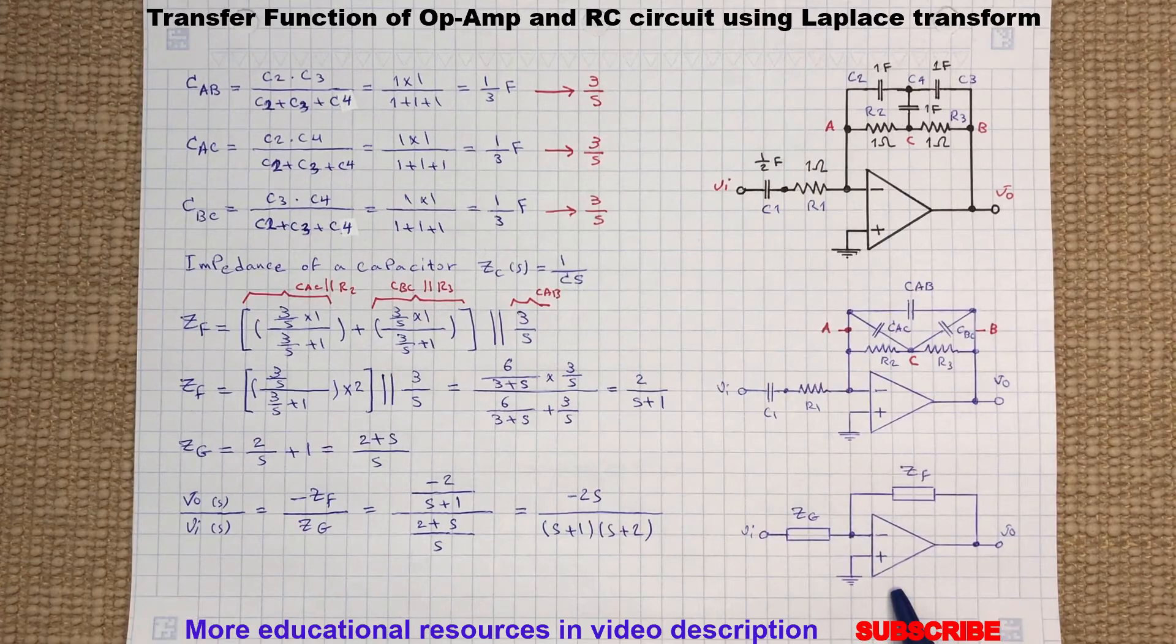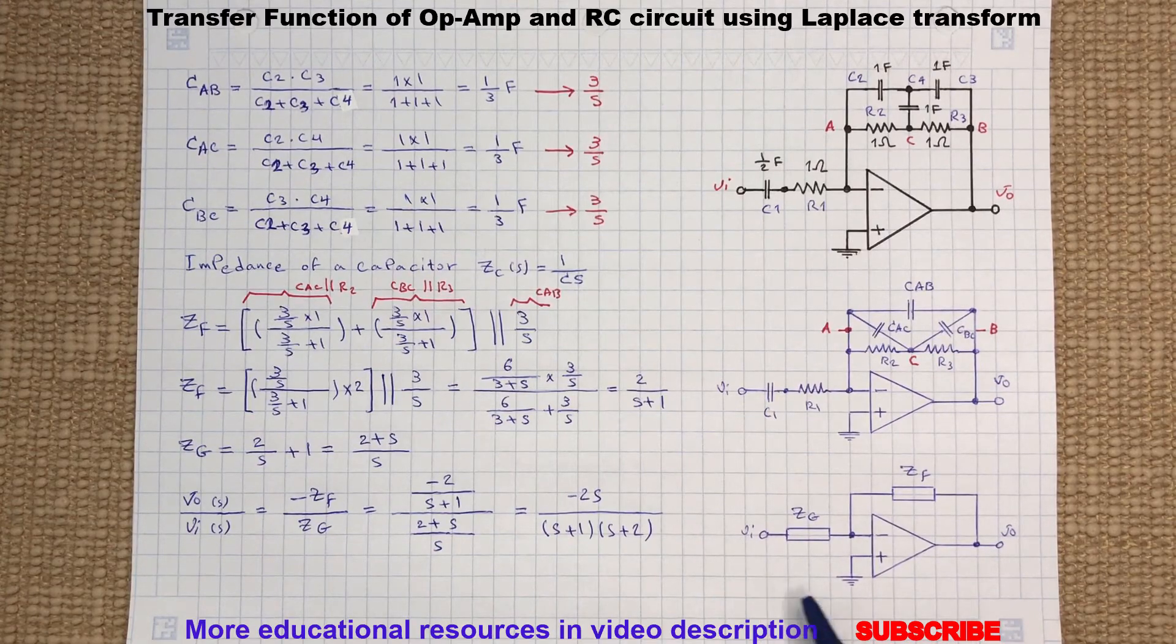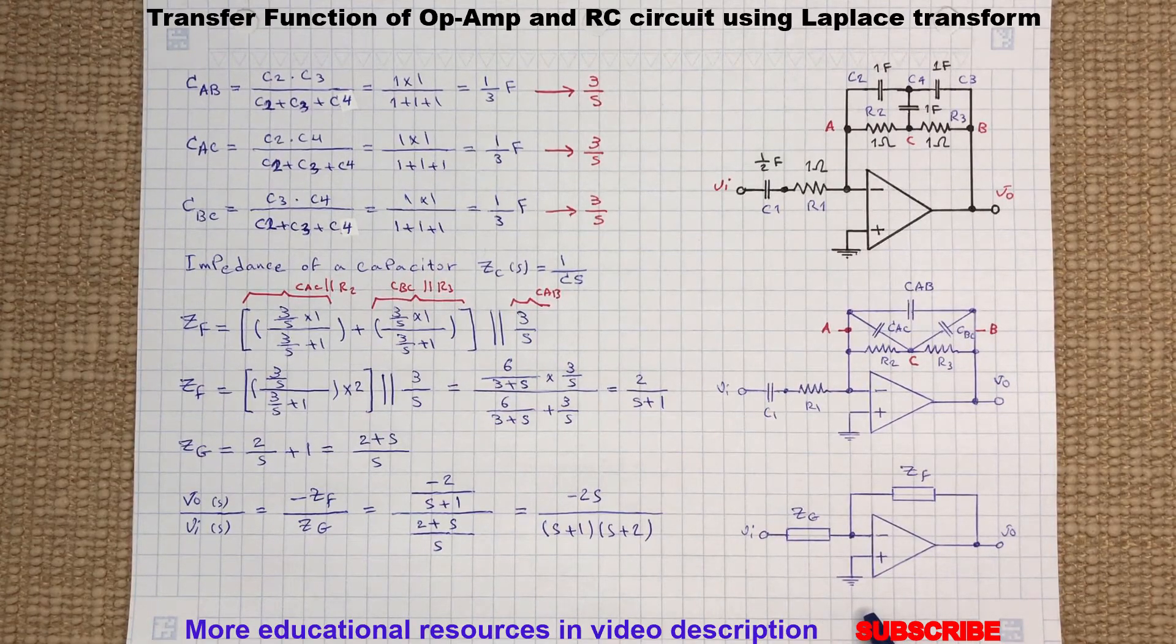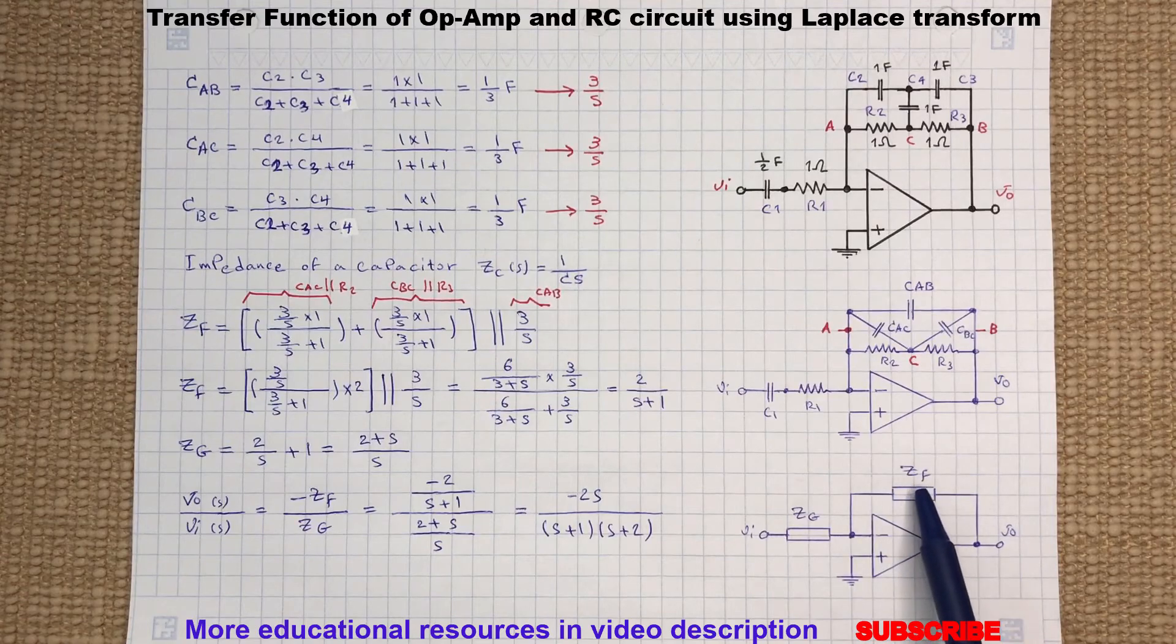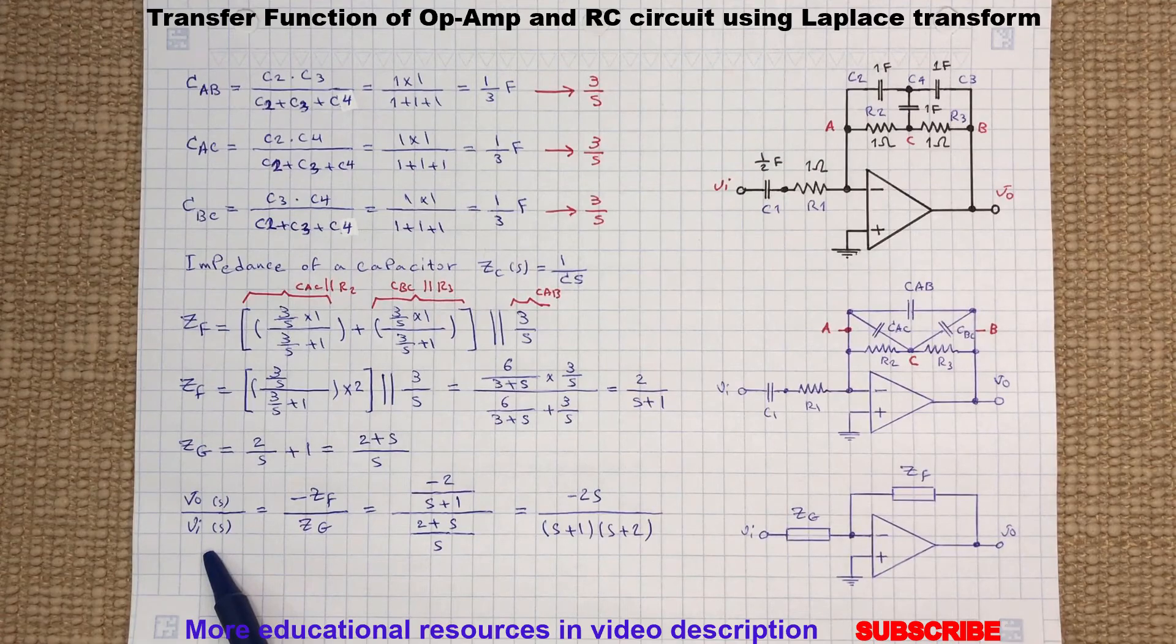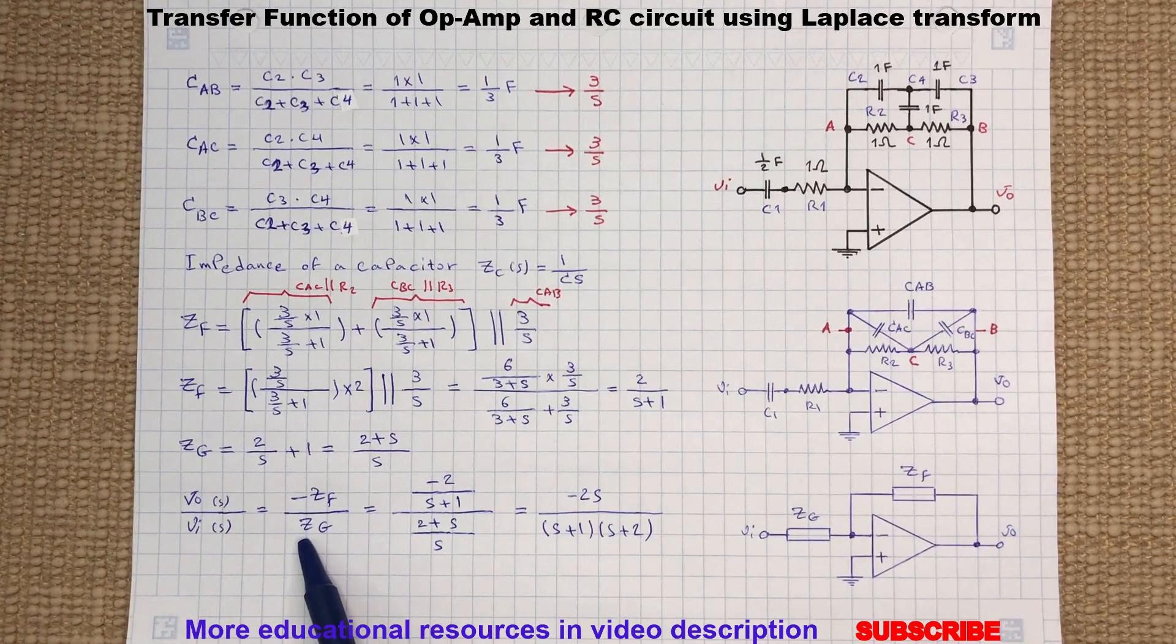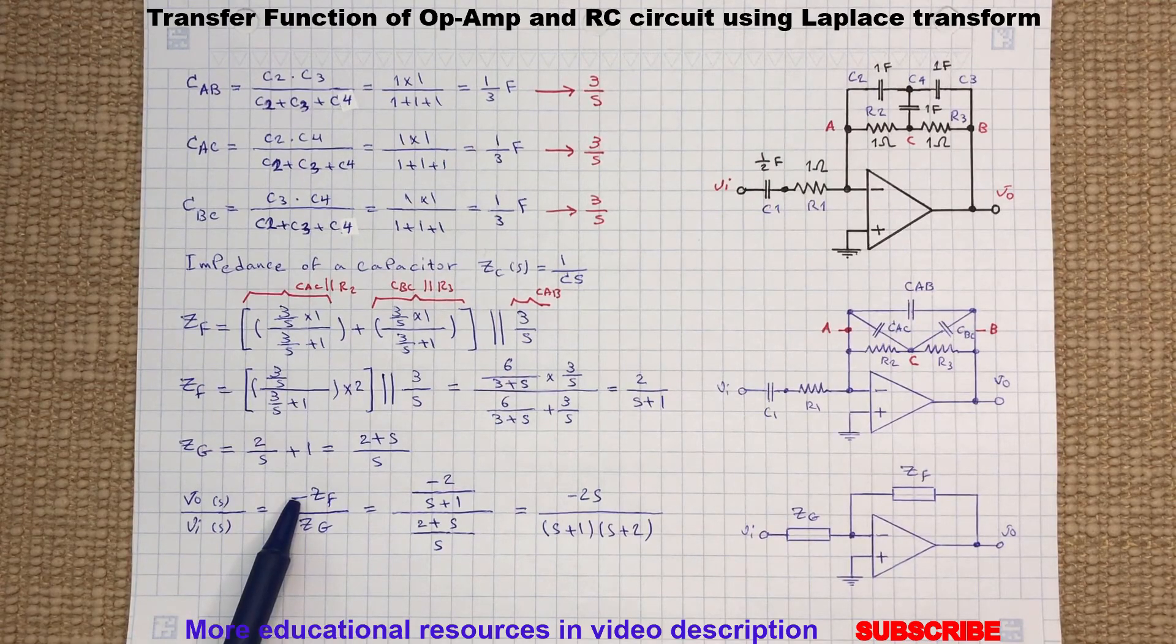Now from electronic circuit analysis we remember that the voltage gain VO to VI of an inverting op-amp is the feedback impedance divided by input impedance. So VO to VI equals minus ZF divided by ZG, and the negative is the 180 degree phase shift between the output and input.